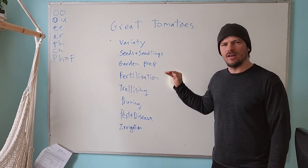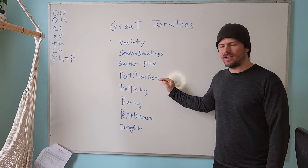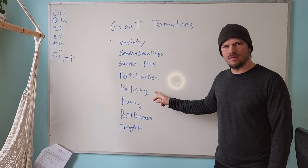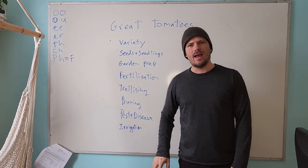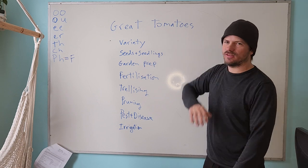But there's a whole list of other topics that we need to consider. So we've got variety selection, season seedlings, garden prep, fertilization, trellising, pruning, pestilence disease, and irrigation. So yeah, let's just start at the top.